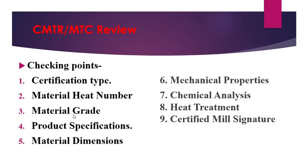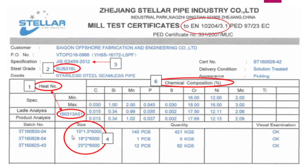Next is the material dimension. We can see here the material dimension. The size is 15 x 1.5 x 6000 - so this material thickness is 1.5, width is 15, and length is 6000. Then 18 x 2 x 6000, 25 x 2 x 6000. This is the material size.